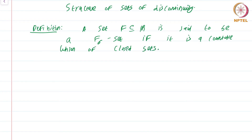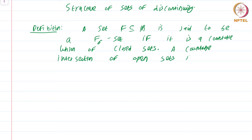Recall that an intersection of closed sets is always closed, and a finite union of closed sets is closed. So a countable union of closed sets need not be closed — I have given an example before. A countable union of closed sets is what is known as an F-sigma set. A countable intersection of open sets is called a G-delta set.